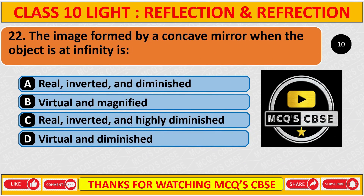The image formed by a concave mirror when the object is at infinity is: the correct answer is C: real, inverted, and highly diminished.